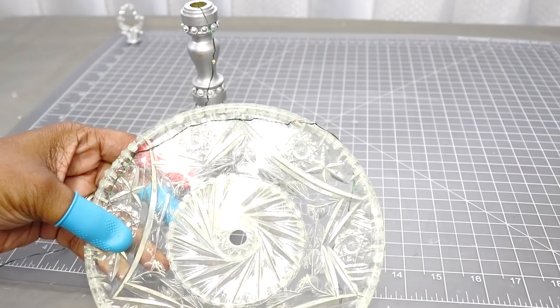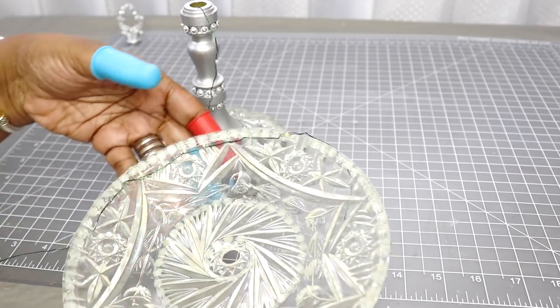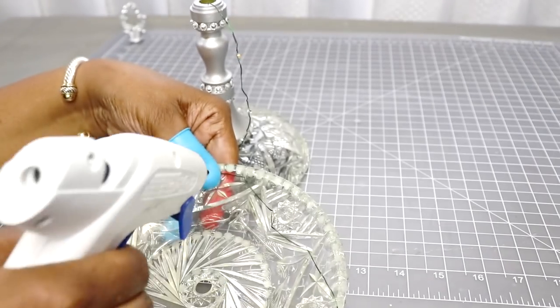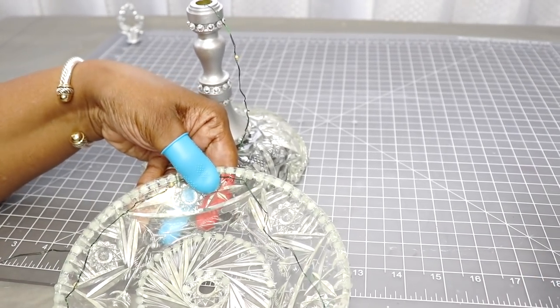So now I'm going to hot glue the fairy lights to the inner portion or the underside of the lamp and I'm going to wrap it in a circular motion and make sure everything is in place and nice and neat.